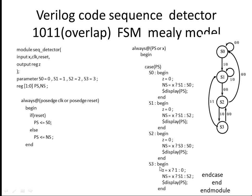The last one, S3. If present state is S3 and you get X equal to 1 — that means you got the full sequence — where is it going? It is going to S1 (since overlap is allowed). If it is 0, it is going to S2. Here, for output Z: if X is 1 you are getting Z equal to 1; else if X is 0, Z is 0.